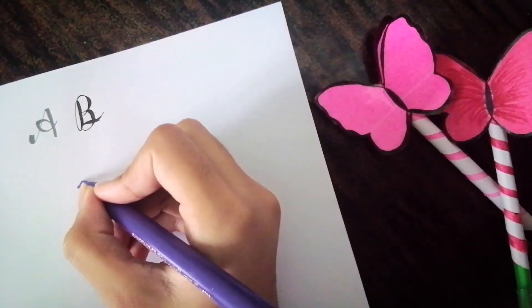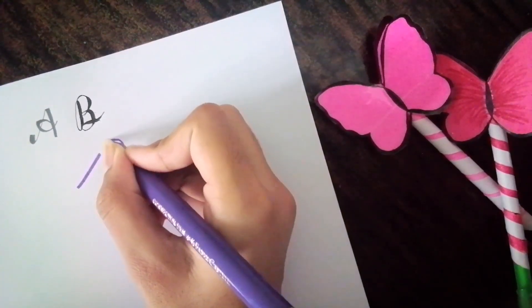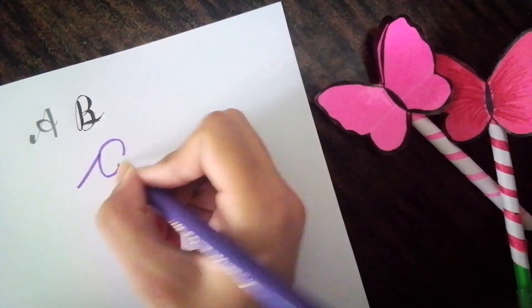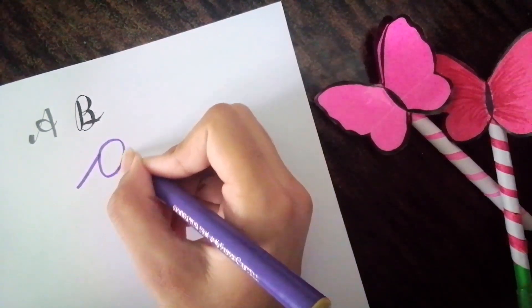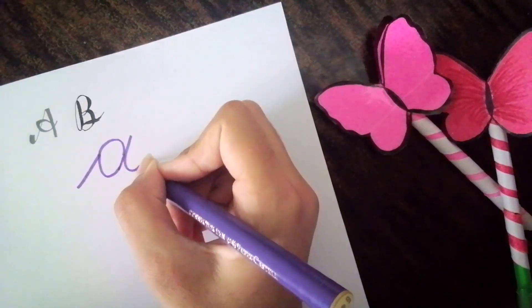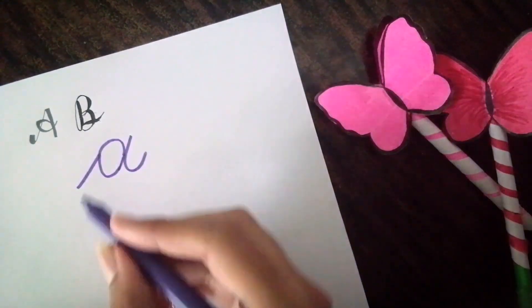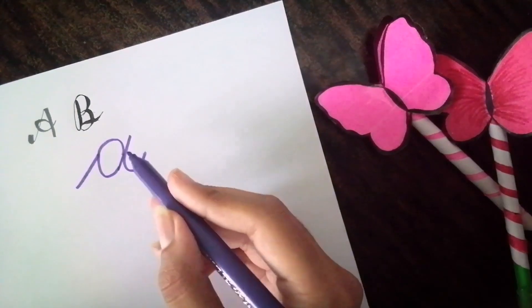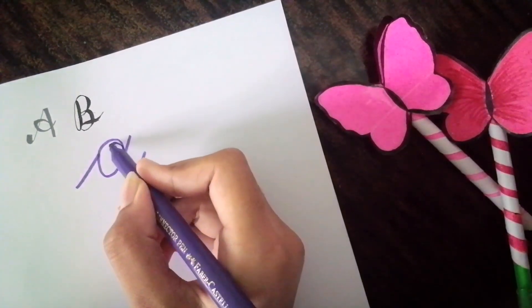Now let me draw some small letters. This is 'a.' Follow the way I'm writing. Time to follow the second rule: thin up, thick down.